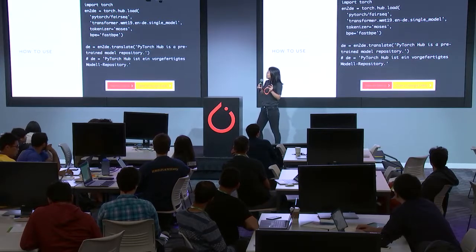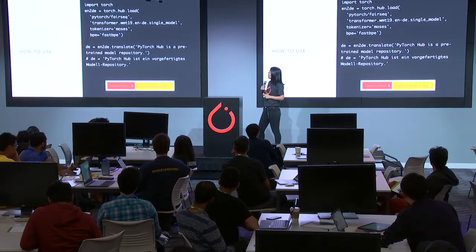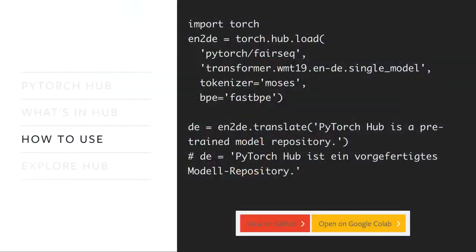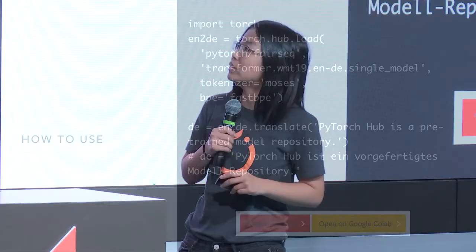Then you can just translate whatever sentence you like — it's super easy. There is a button on the web page called 'Open on Google Colab', so you can click on that and it will redirect you to the Colab notebook. If you want to run faster, they provide free GPUs that you can use to speed up your inference.